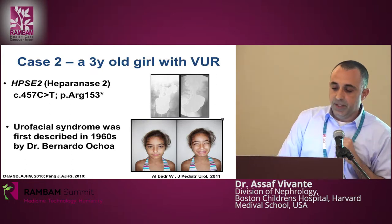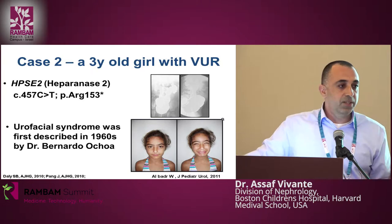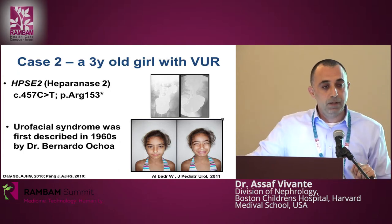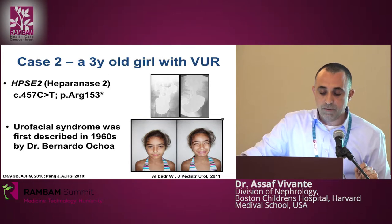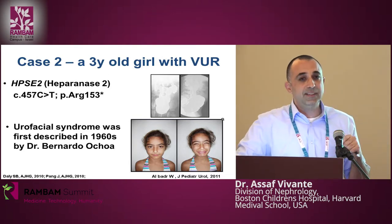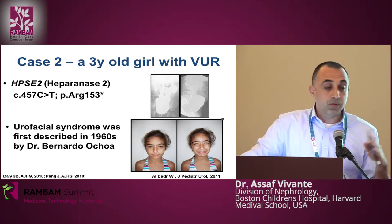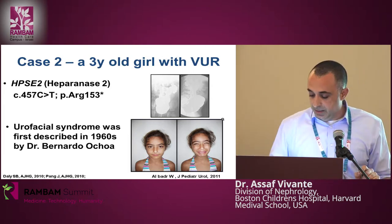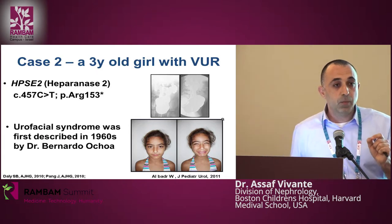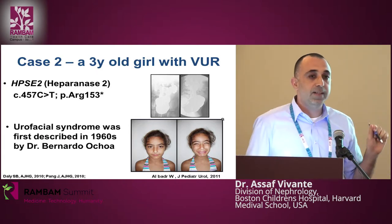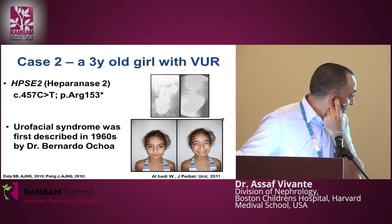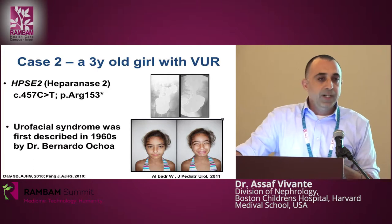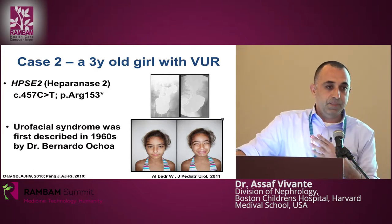The first example is a three-year-old girl with vesicoureteral reflux in whom we found a mutation in HPSE2 — a premature stop codon previously reported to be responsible for the urofacial syndrome. This syndrome was clinically described in the 1960s by Dr. Ochoa and is also called Ochoa syndrome. These patients have bladder abnormalities, vesicoureteral reflux, as well as a distorted facial expression when smiling. The gene was cloned in 2010 with one more publication in 2011.